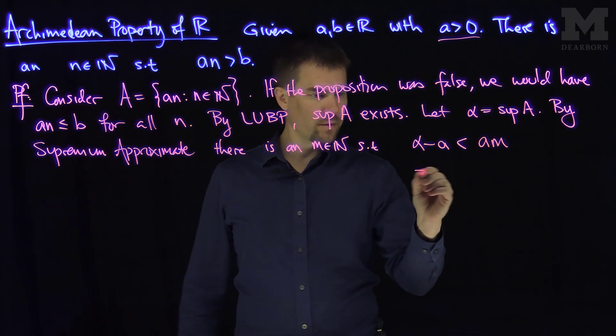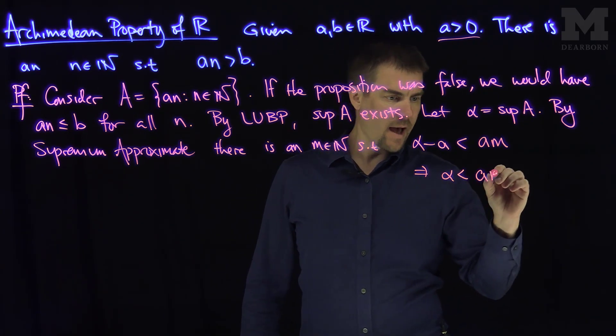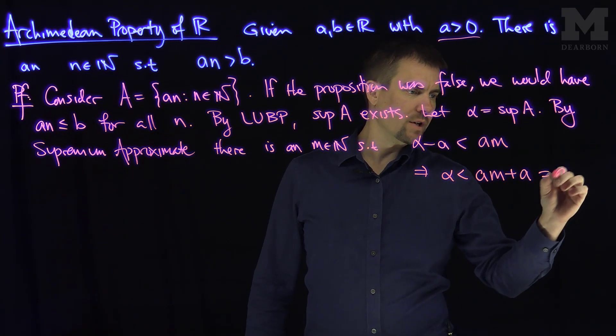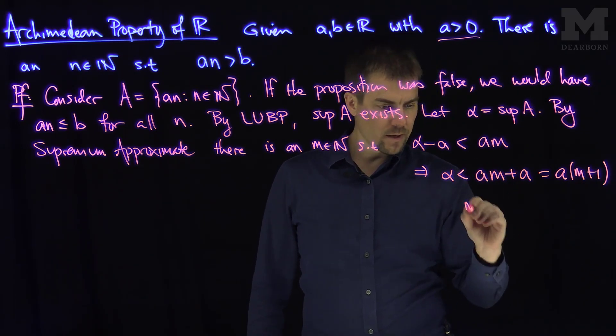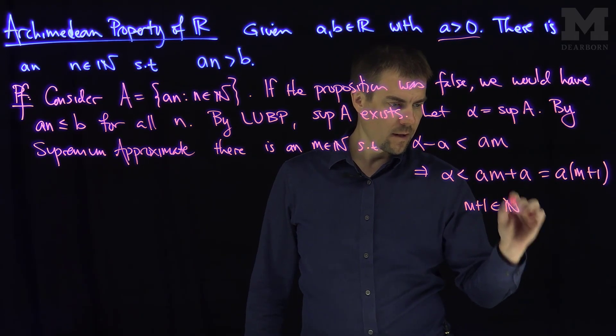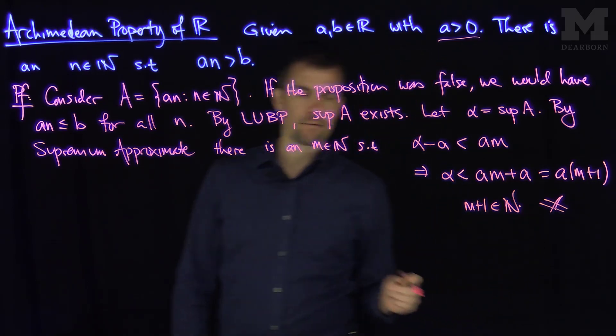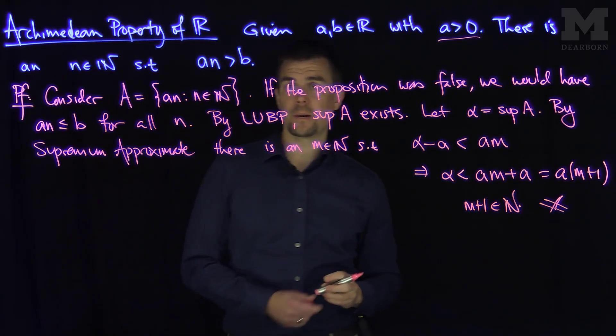But this is equivalent to saying that alpha is less than a times m plus one, which is a times m plus one, and m plus one is of course in N, and that contradicts the fact that alpha is the supremum. So we have the Archimedean property.